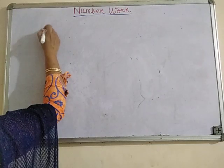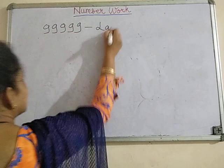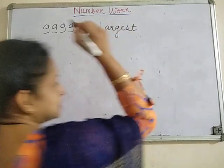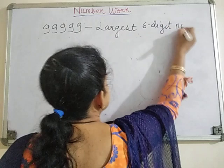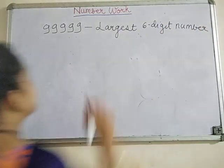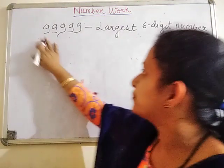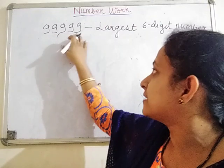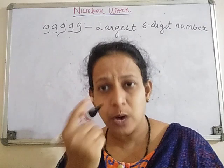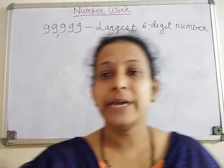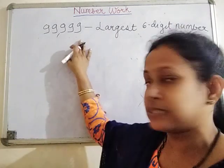Ninety-nine thousand nine hundred and ninety-nine is the largest five-digit number. Up to five-digit numbers you have learned, and you know that ninety-nine thousand nine hundred and ninety-nine is the largest five-digit number. That means if you just add one to it, it will become a little more higher - much larger compared to this number.